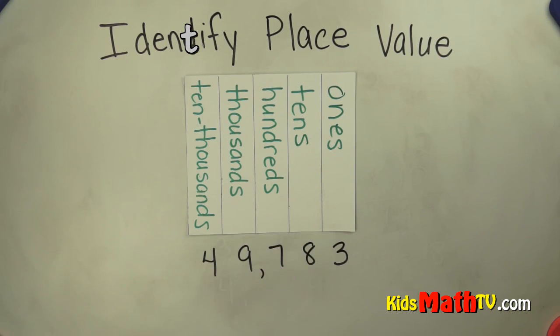We just have from ones to ten thousands here. So if I have this number here, this is forty-nine thousand seven hundred eighty-three.